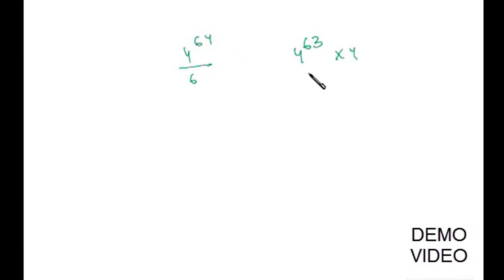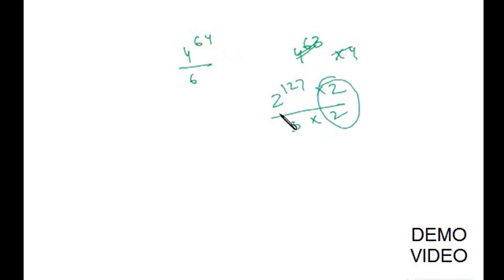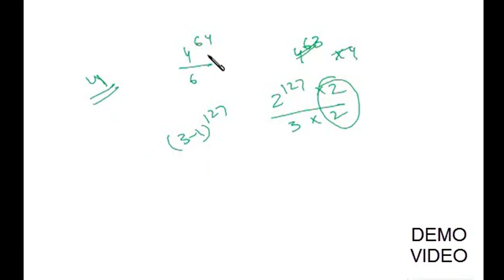Another example: 4^64 divided by 6 — what is the remainder? The common factor between 4 and 6 is 2. Write 4^64 as 2^128 = 2^127 × 2, and 6=3×2. Now 2^127 = (3−1)^127 divided by 3 gives remainder (−1)^127 = −1, meaning positive remainder 2. Multiplying by the common factor 2, the final remainder when 4^64 is divided by 6 is 2×2=4.